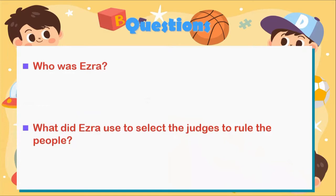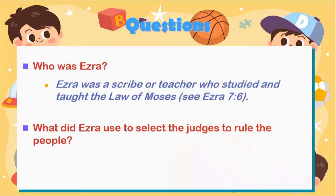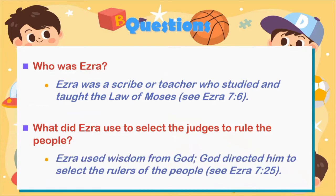Questions: Who was Ezra? Ezra was a scribe or teacher who studied and taught the law of Moses. What did Ezra use to select the judges to rule the people? Ezra used wisdom from God — God directed him to select the rulers of the people.